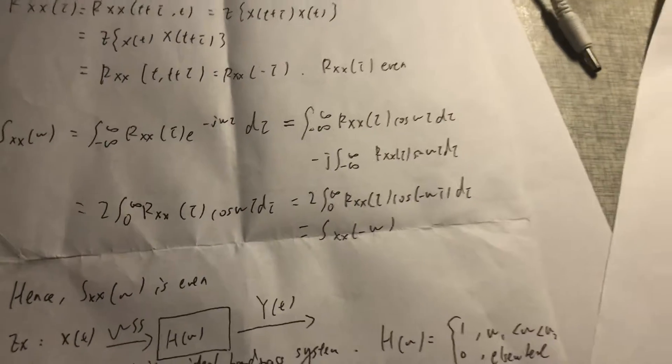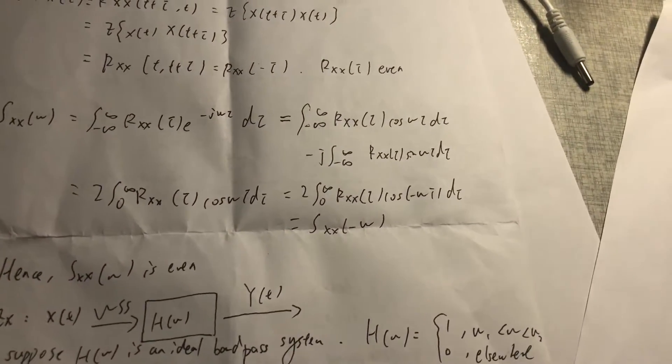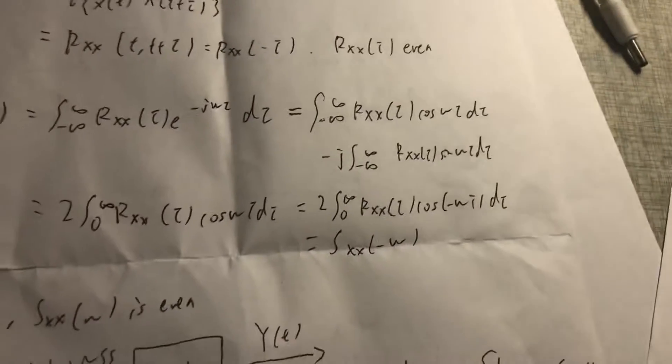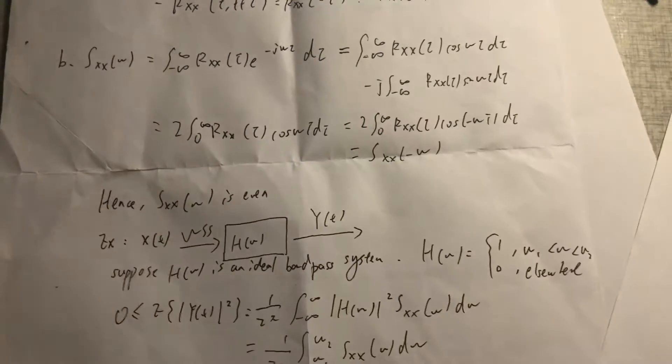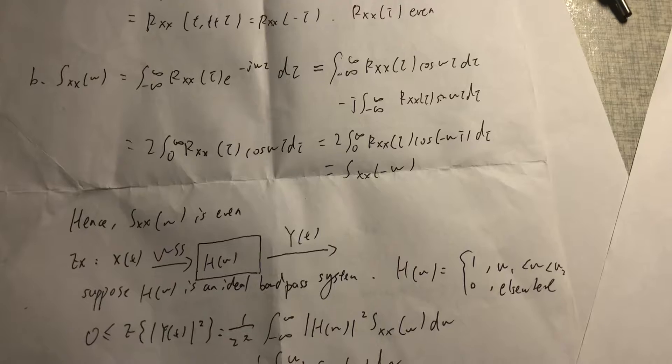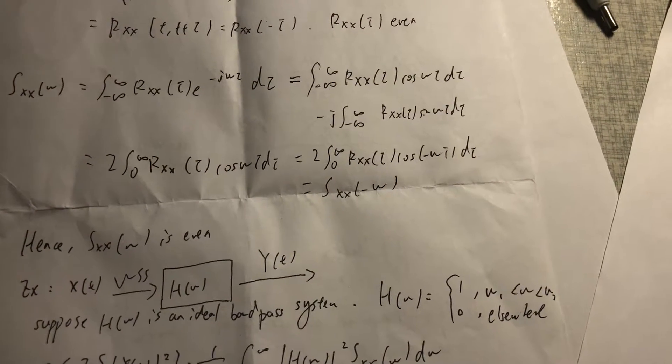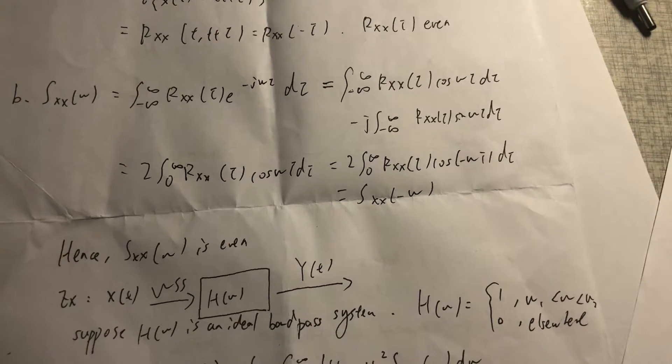R_XX(τ) equals the integral from minus infinity to infinity of R_XX(τ)cos(ωτ)dτ minus i times the integral from minus infinity to infinity of R_XX(τ)sin(ωτ)dτ.